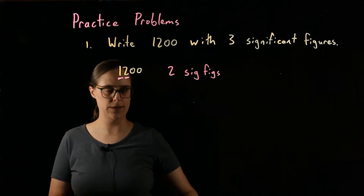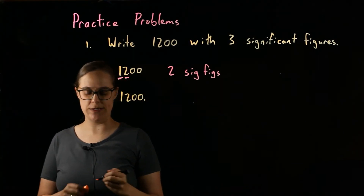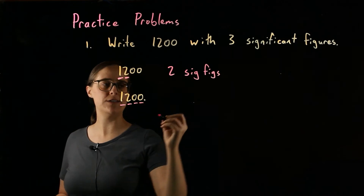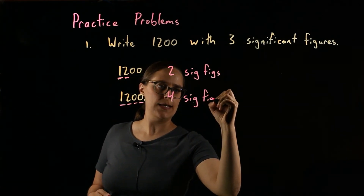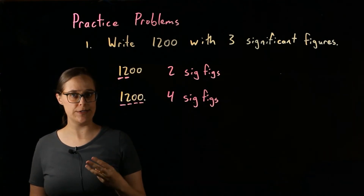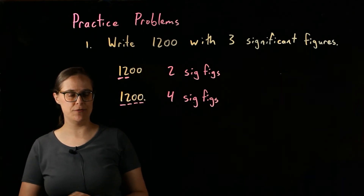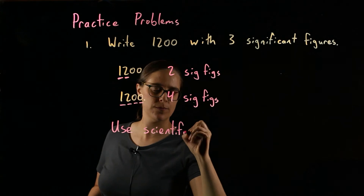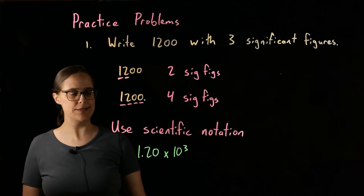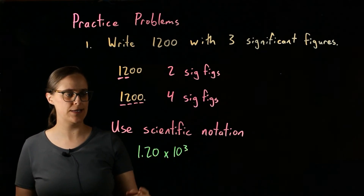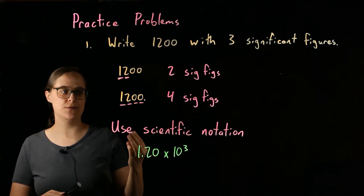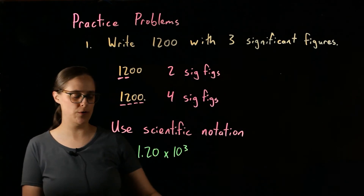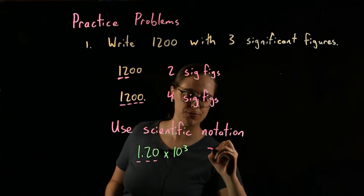However, with a decimal point, 1,200 with an actual decimal point has four significant figures because the trailing zeros become significant. In a case like this, if you want to write 1,200 with three significant figures, decimal format is not going to work — you need to use scientific notation. The answer is 1.20 times 10 to the 3. Any and all digits in the coefficient are significant, so 1, 2, and 0 are all significant, giving three significant figures.